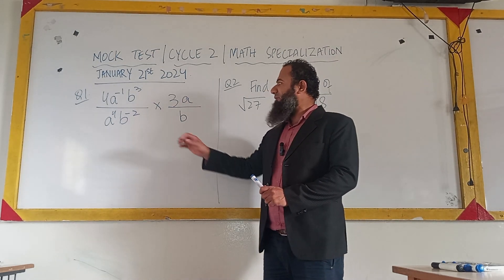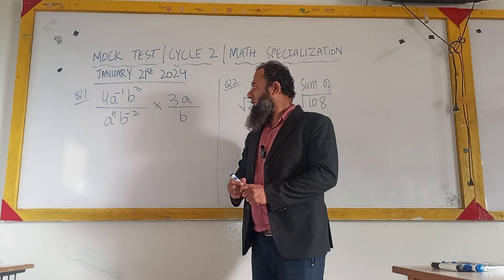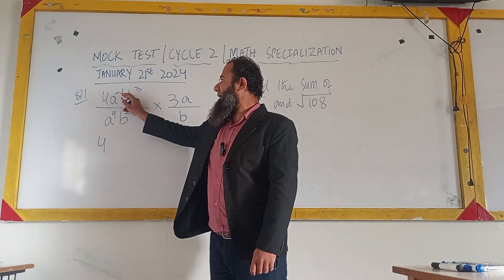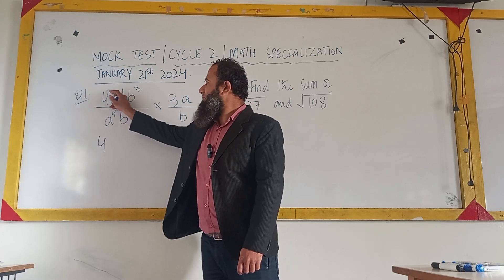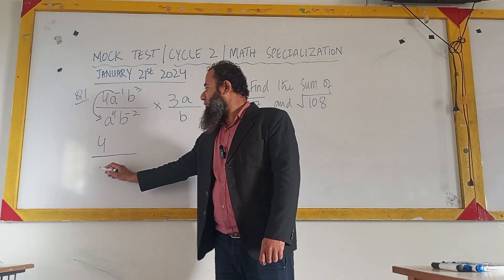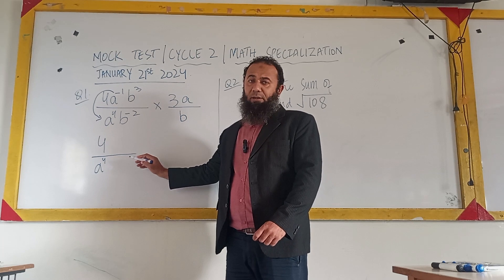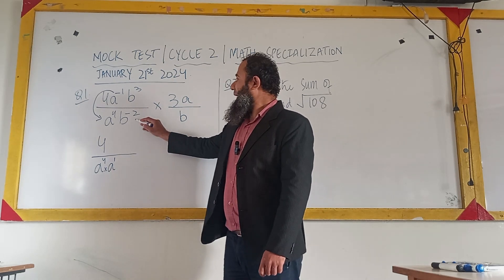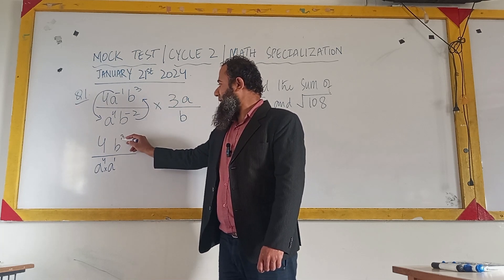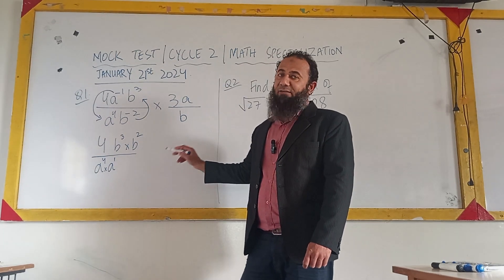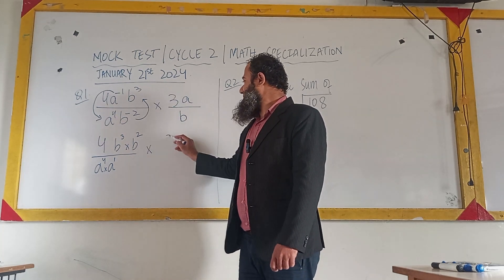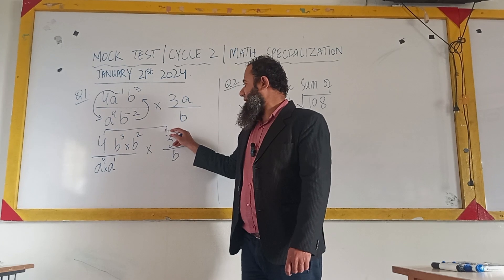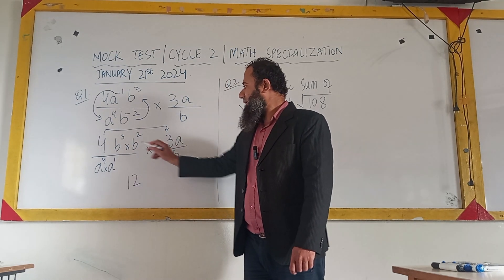To simplify this fractional expression, first we need to make the negative index a positive index. To do that, we shift the base with the negative index to the denominator. We already have a power 4 in the denominator; when we shift a power minus 1 there, it becomes plus 1. Similarly, shifting a negative index to the numerator makes it positive. Then we copy down the second fraction.